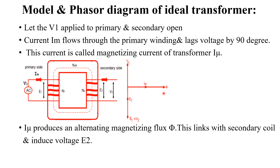Due to the flow of this flux phi through the core of the transformer, it will also pass through the secondary winding of the transformer, so that an EMF E2 will be induced in the secondary winding. And E2 is the same as V2.